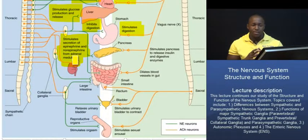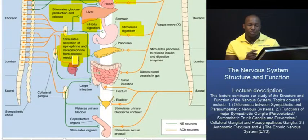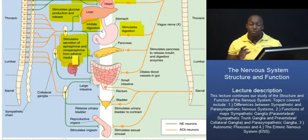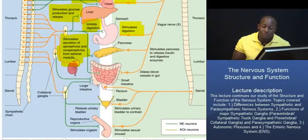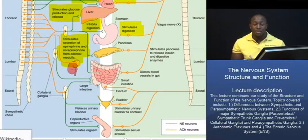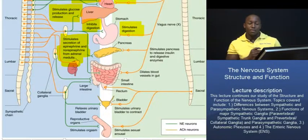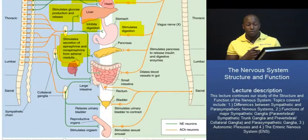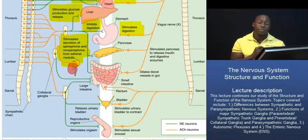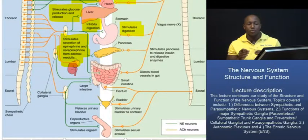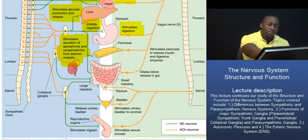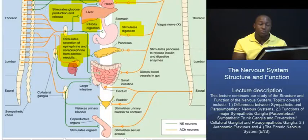Those are some of the key differences between the sympathetic and parasympathetic responses. One more thing to point out on this slide is something we've already talked about, but I want to reinforce the point: the difference between a pre- and a post-ganglionic neuron. A pre-ganglionic neuron is one that has its cell body within the central nervous system. The post-ganglionic neurons emerge from those ganglia and carry impulses to the effector sites. That pretty much completes the overview of the antagonistic effects of these two systems.